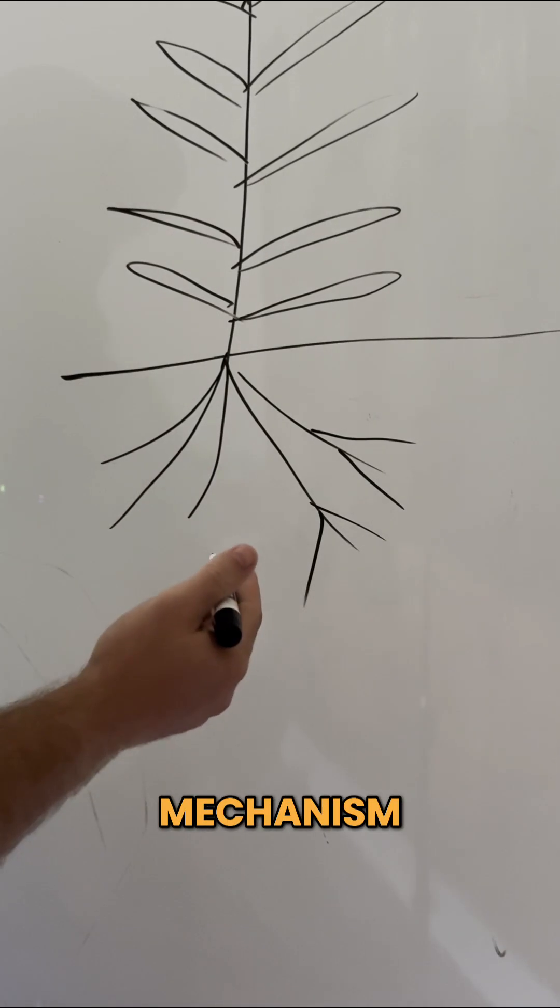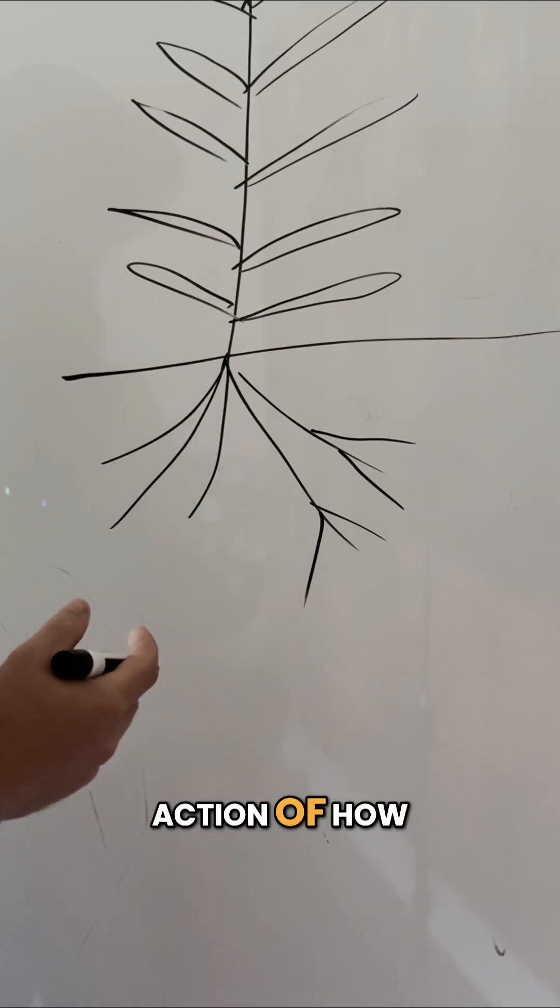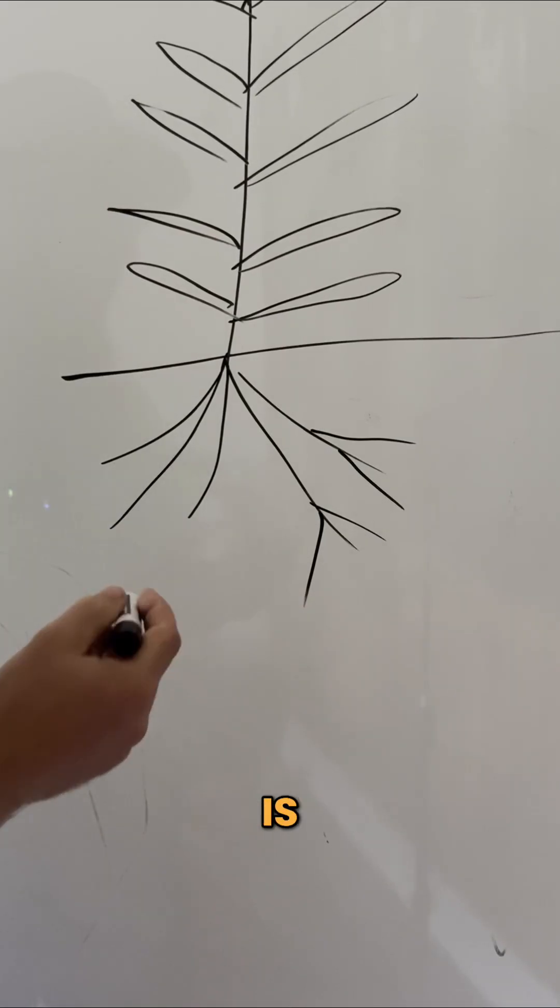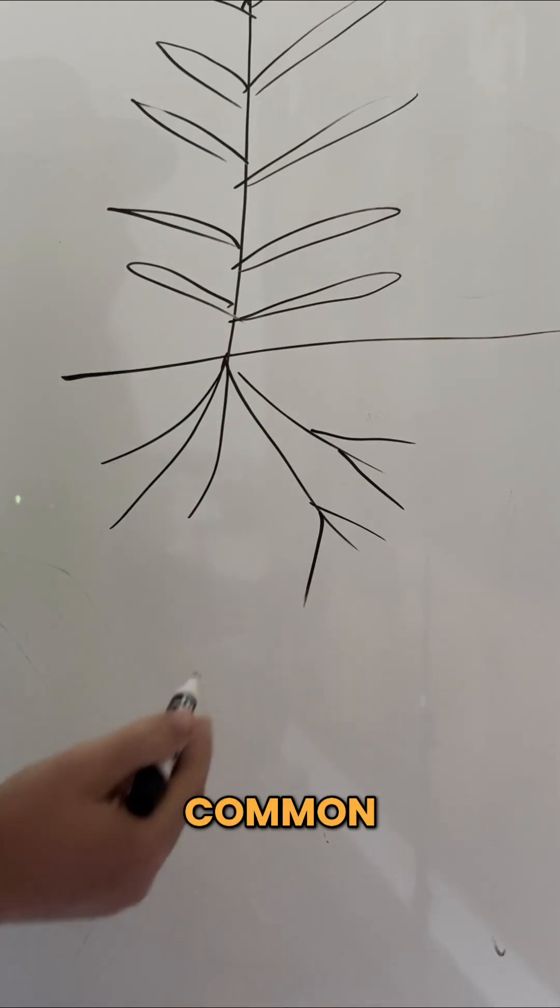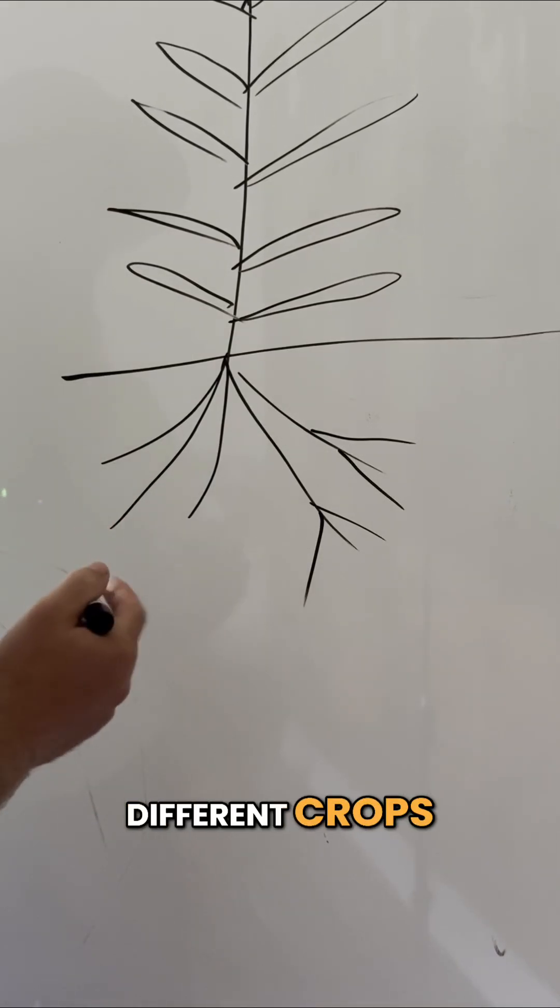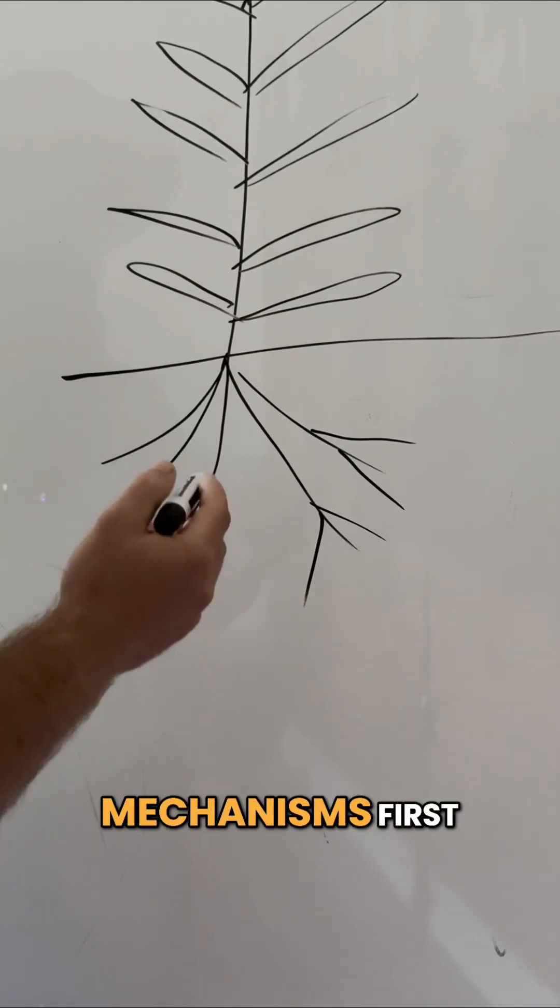We discussed the mechanism and the modes of action of what might have contributed to that yield response. But this is actually a very common result that we see with rebound cobalt applications on a number of different crops. And there are a couple of key mechanisms.